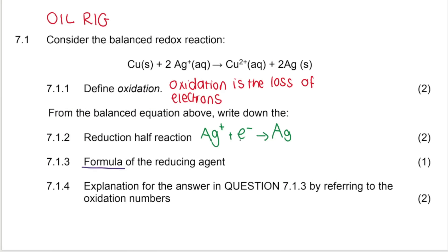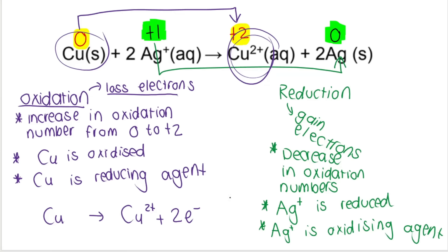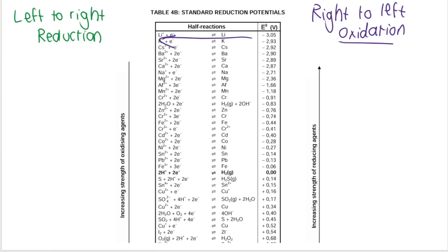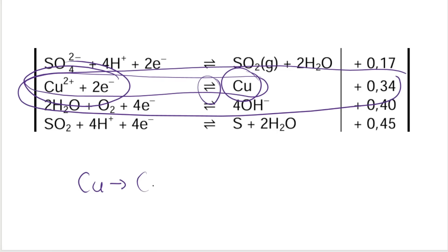They want the formula, so you write Cu. And just to show you, the oxidation half reaction would start with copper on the left-hand side, then an arrow, and Cu²⁺ on the right-hand side. Oxidation is loss of electrons, so the copper loses electrons to form Cu²⁺. If you don't know how to write that, find copper on table 4B. Because we know it is oxidized, we read the half reaction from right to left — write copper first, then the arrow, then the stuff. That way we can just use the table to help write down the half reaction.